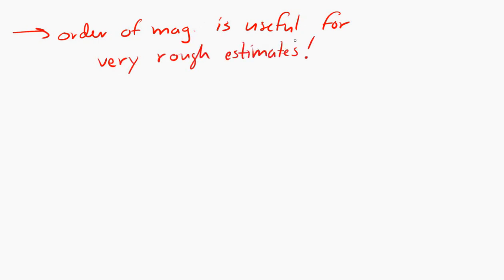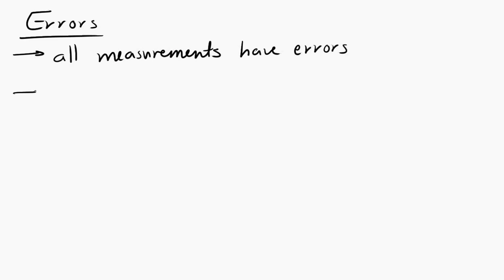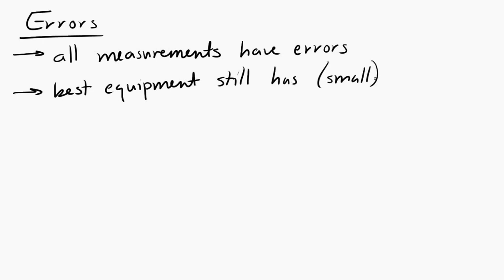Now let's take a look at errors. When anyone makes a measurement, there are errors — always. Even the best equipment has errors, even if they're just very small. Errors are always there, and so we have to consider them. We divide errors into two categories: random and systematic.